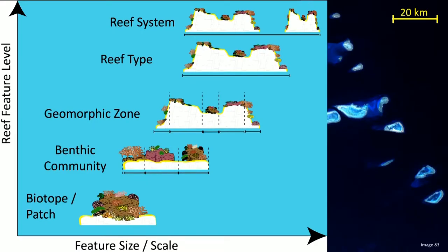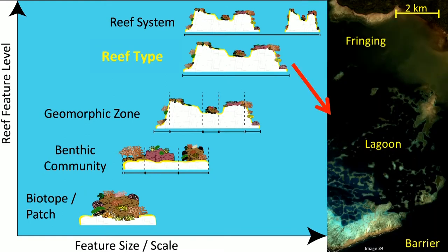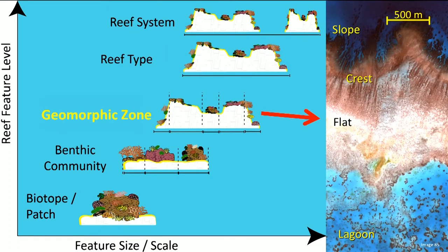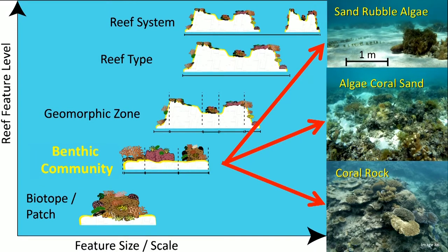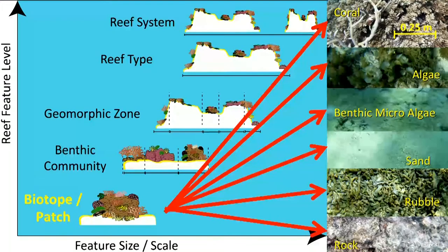If you look at coral reef systems, you can look at different reef feature levels and each feature level contains a different feature size and scale. The top level is the reef system, made up of several coral reefs. Each reef can be characterized as a fringing reef, a lagoon reef, or a barrier reef. Within each reef type you can look at different zonations: the reef slope, the reef crest, the reef flat and the lagoon. Each of these is built up of different benthic communities — combinations of sand, rubble, algae, or other types. The last level is the biotope or patch, which describes the highest level of detail.